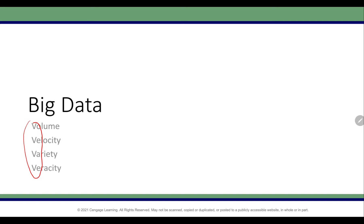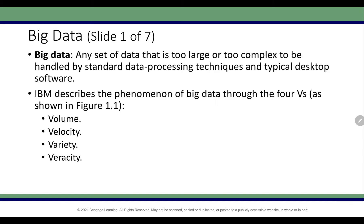Let's briefly touch on big data. Big data is any set of data that is too large or too complex to be handled by standard data processing techniques and typical desktop software. Big data is somewhat subjective — if data is bigger than your computer can handle, that's big data for you. The four V's of big data were defined by IBM: Volume, Velocity, Variety, and Veracity.